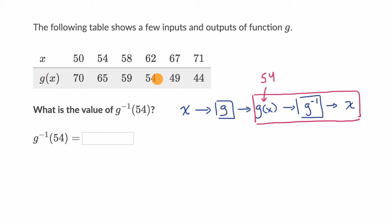And we can see that right over here. When g of x is 54, the corresponding original input is 62. So this will be equal to 62.